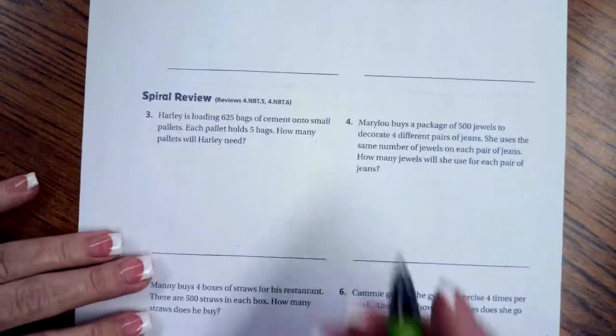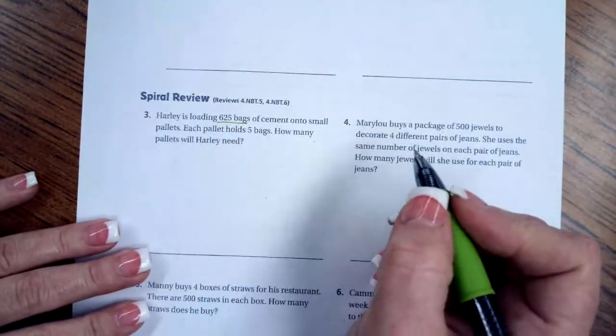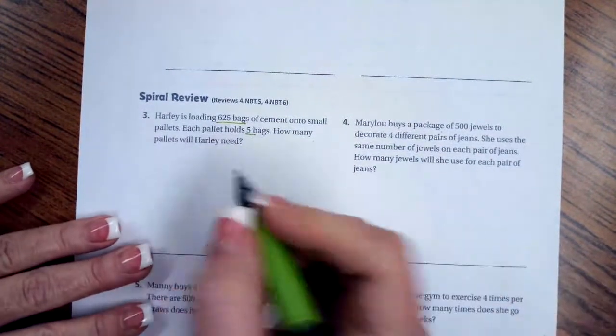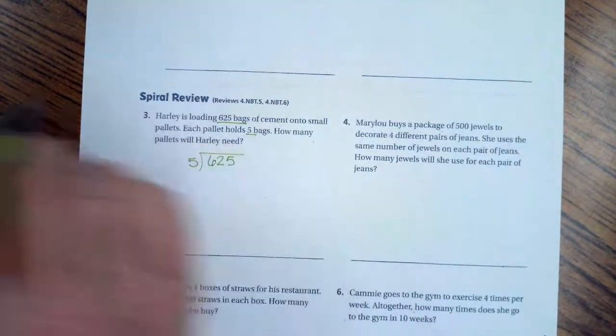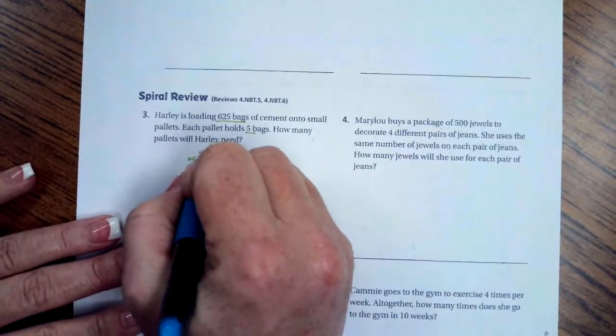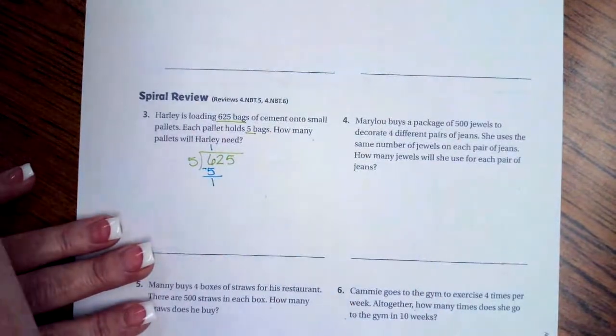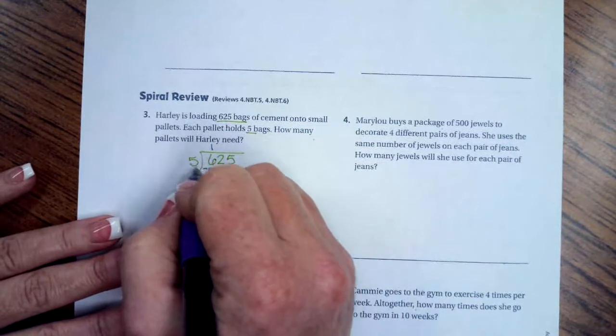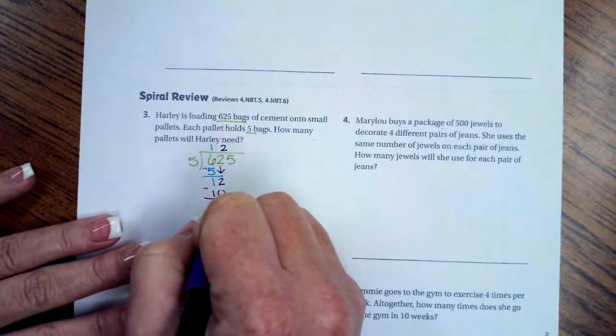It says Harley is loading 625 bags of cement onto small pallets. Each pallet holds five bags. How many pallets will I need? So 625 divided by 5. Five will go into six one time, which is 1 × 5 = 5. Subtract, I get one. I'm going to bring down my two. Five goes into twelve two times. 2 × 5 = 10. Subtract, I get two. I'm going to bring down my five on the end.